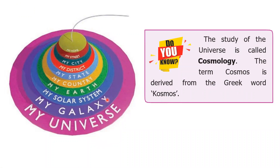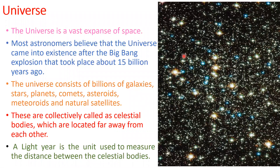The Universe consists of millions of galaxies. In the Milky Way galaxy, our solar system is there, and our Earth is one of the eight planets in the solar system. The Earth has seven continents and we live in India. In India, our state is Tamil Nadu, which has different districts, and every district has a city, different streets, and that is your home. So this is our address in the Universe.